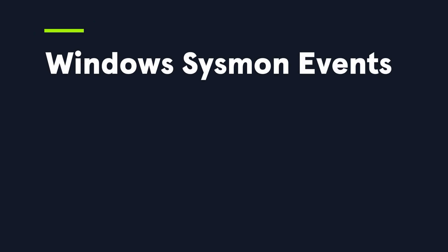Starting off the Sysmon list is event ID 1, process creation. This is very similar to Windows security event ID 4688, but with way more details like command line, parent process, and file hash. This is great for spotting malicious execution and correlating known bad hashes.